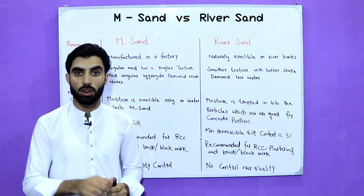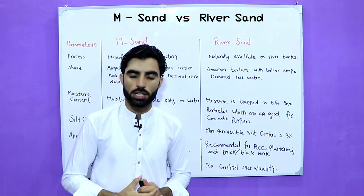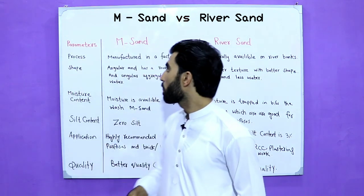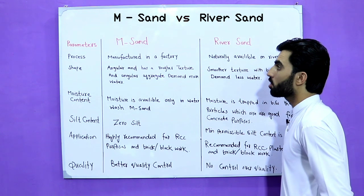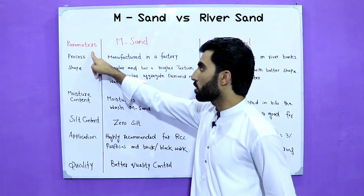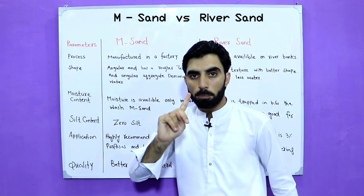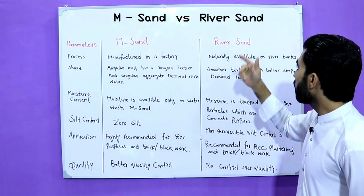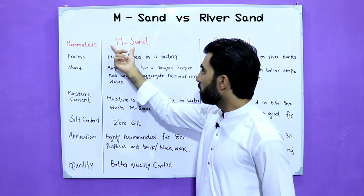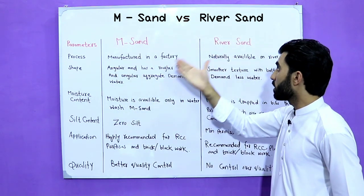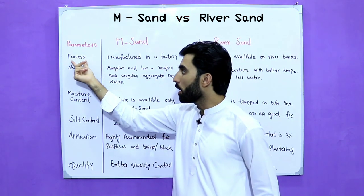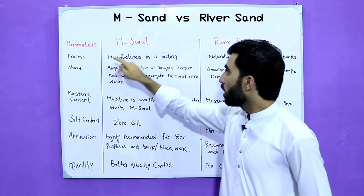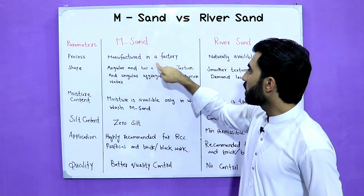If this video is helpful for you, don't forget to like this video. If you are new on this channel, subscribe and press the bell icon to get notifications for new updates. Let's start. Here in the first column you can see parameters for M-sand and also for river sand; the second column is M-sand and the third column is river sand.